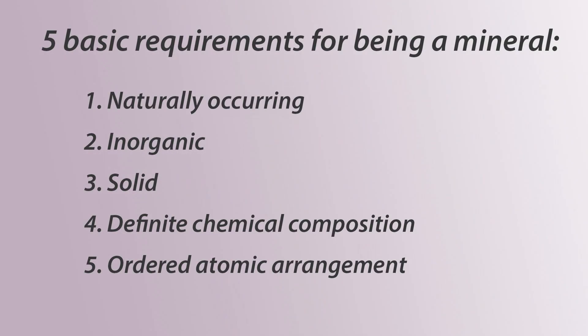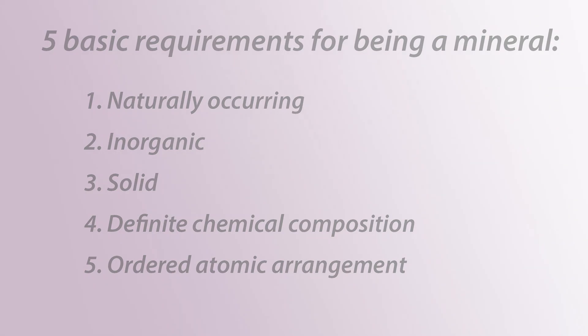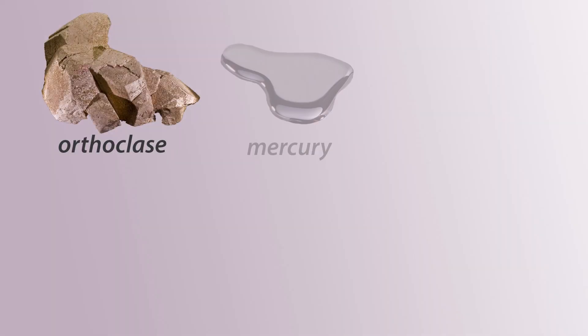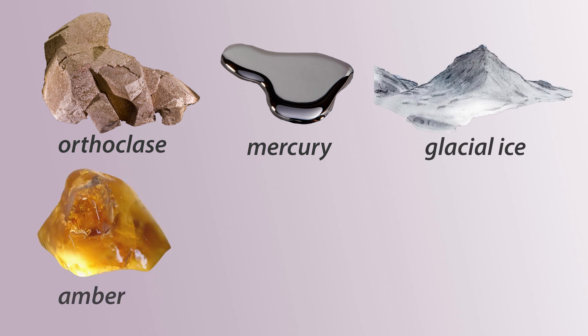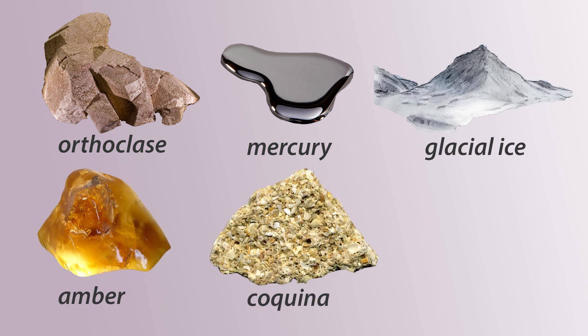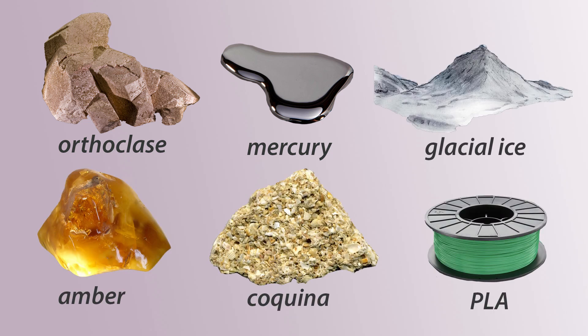So those are the five requirements for minerals. Now let's look at some examples to figure out how these apply. We have orthoclase feldspar, mercury, glacial ice, amber, coquina, and PLA on the screen. Take a second to pause the video and work through which of these would be minerals and which ones wouldn't.